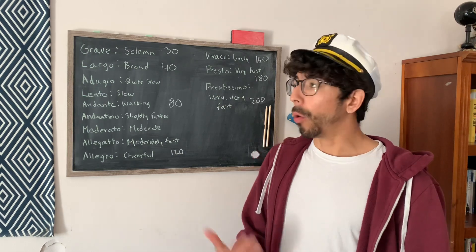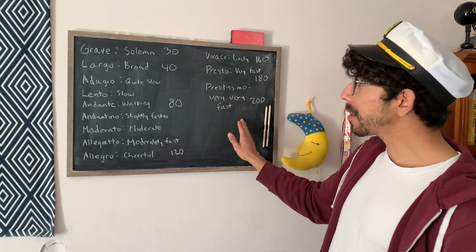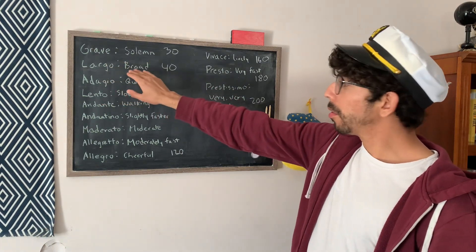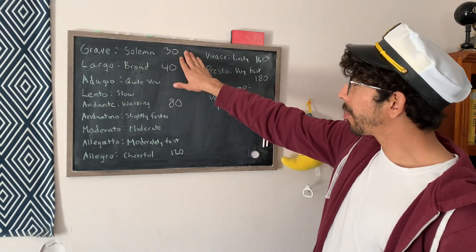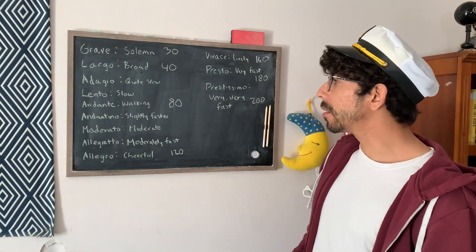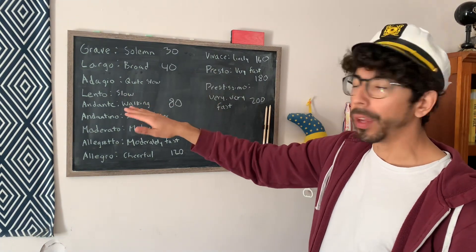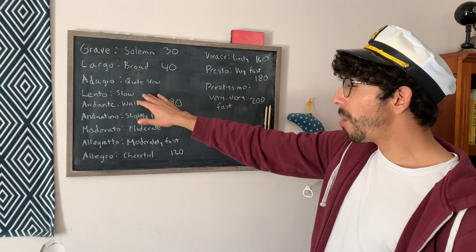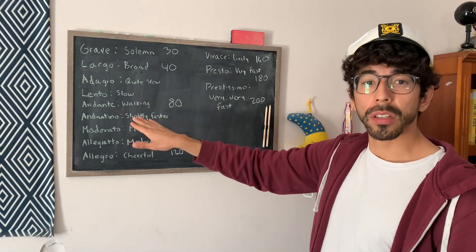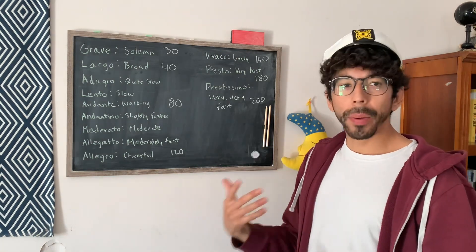So what are the markings? From slowest to fastest, we have grave, or solemn. We have largo, which means broad, which is around 30 to 40 BPM — so it's pretty, pretty slow. Then we get to adagio, which is quite slow — it starts to speed up a little bit. Lento means slow, still in the slow range. Then we have andante, which is kind of like a walking pace, around 80 BPM.